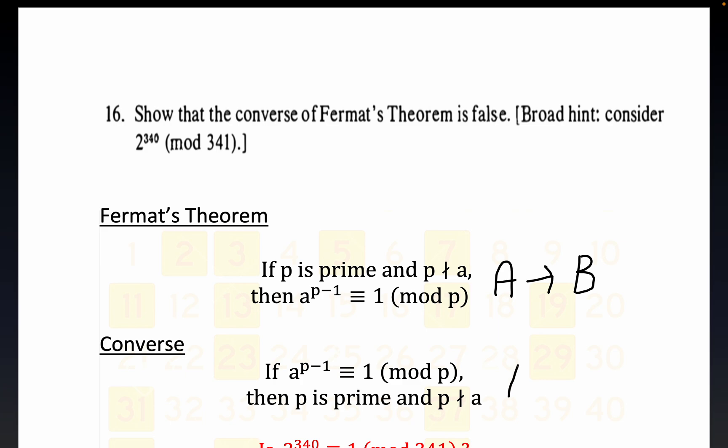Now this converse is just the opposite - this would be B implies A. That's what they mean by converse, with the obvious choices for A and B. So we're trying to show that something that is well known to be true has a converse that is not true.